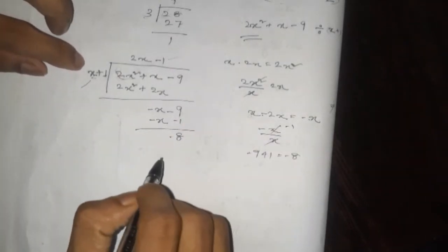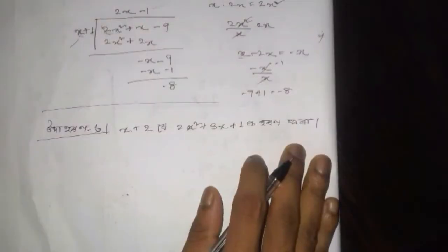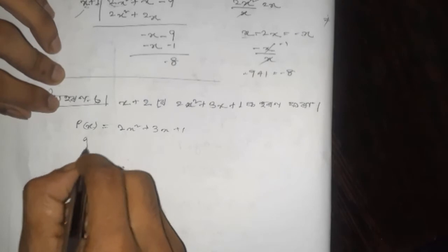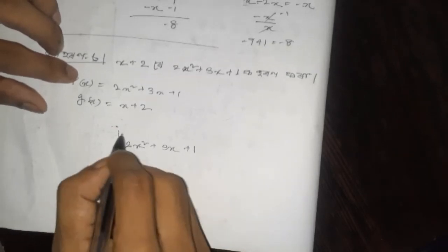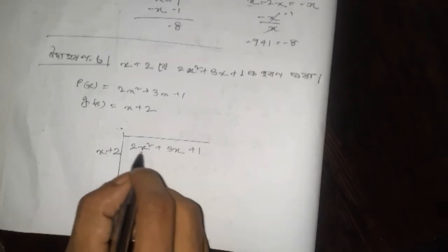This is the number of 2x² plus 3x plus 1. This is the number of 2x² plus 3x plus 1. This will be 2x² plus 2x² plus 1, which is 2x² plus jx plus 1. This will be 2x² plus 1.